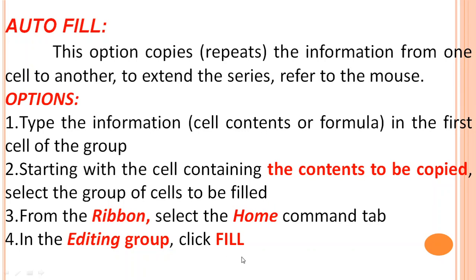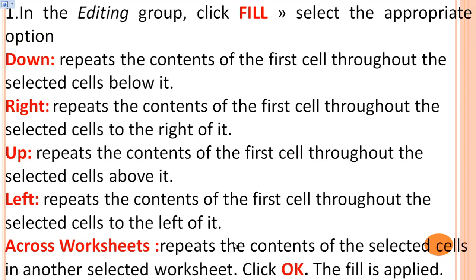To perform AutoFill using the ribbon: go to the Home tab, then the Editing group, then click Fill. Select the appropriate option — Down, Right, Up, or Left. If you click Down, it fills the cells below. If you click Up, it repeats the contents of the first cell throughout the selected cells above it. If you click Left, it fills the selected cells to the left. If you click Right, it fills to the right.